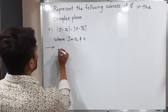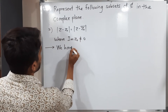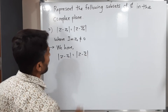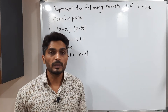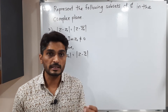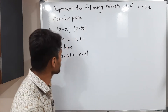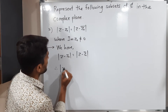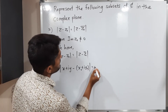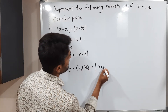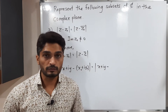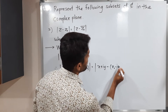I will start with the given expression. We have mod(Z − Z₀) = mod(Z − Z̄₀). We replace Z by x + iy, and Z₀ being a fixed complex number is replaced by x₀ + iy₀. Z̄₀ is the complex conjugate of Z₀, which is x₀ − iy₀. So: mod(x + iy − x₀ − iy₀) = mod(x + iy − x₀ + iy₀).